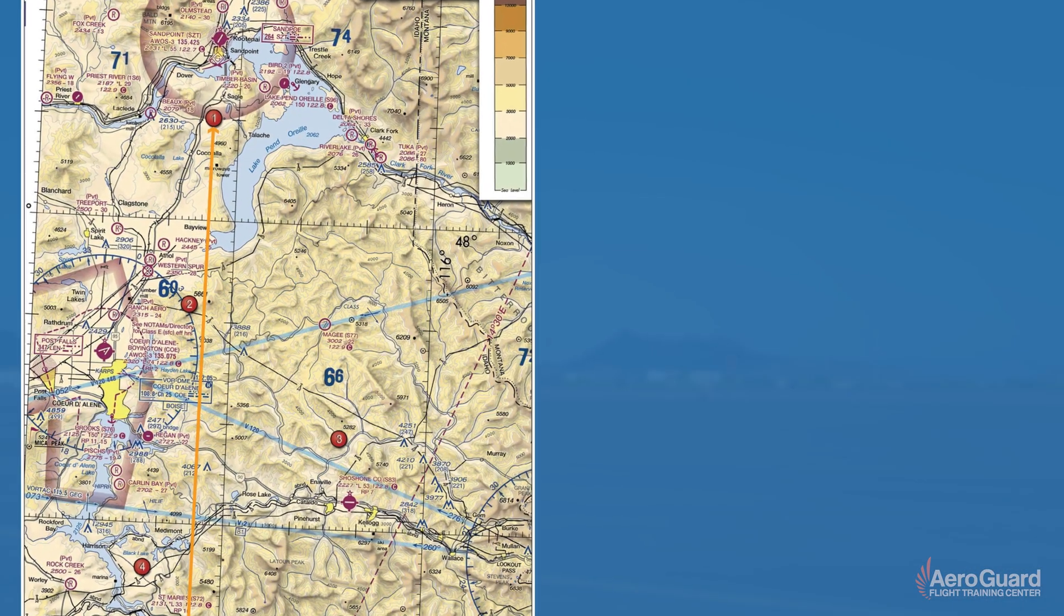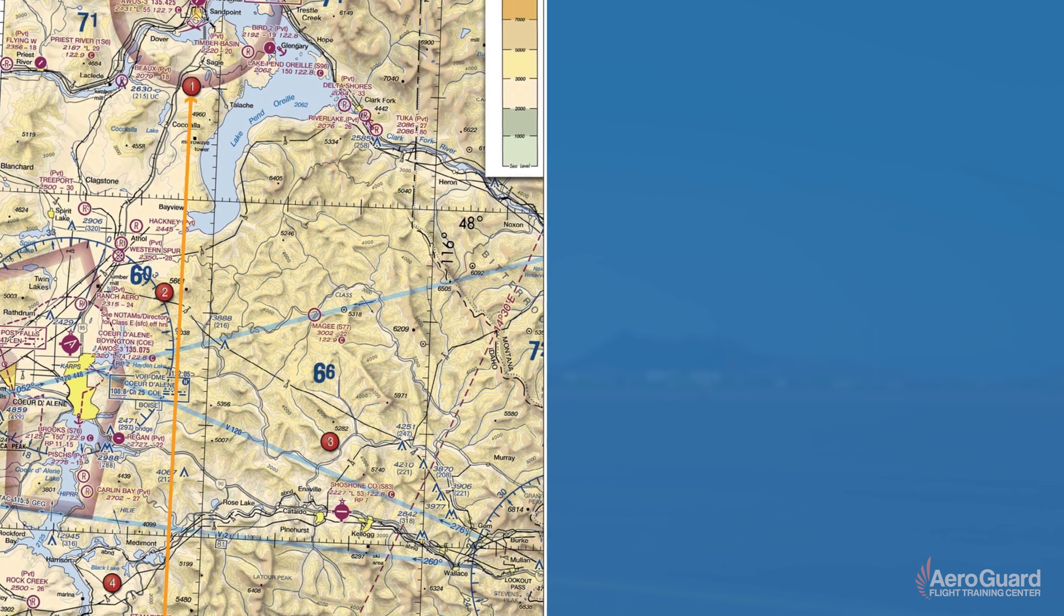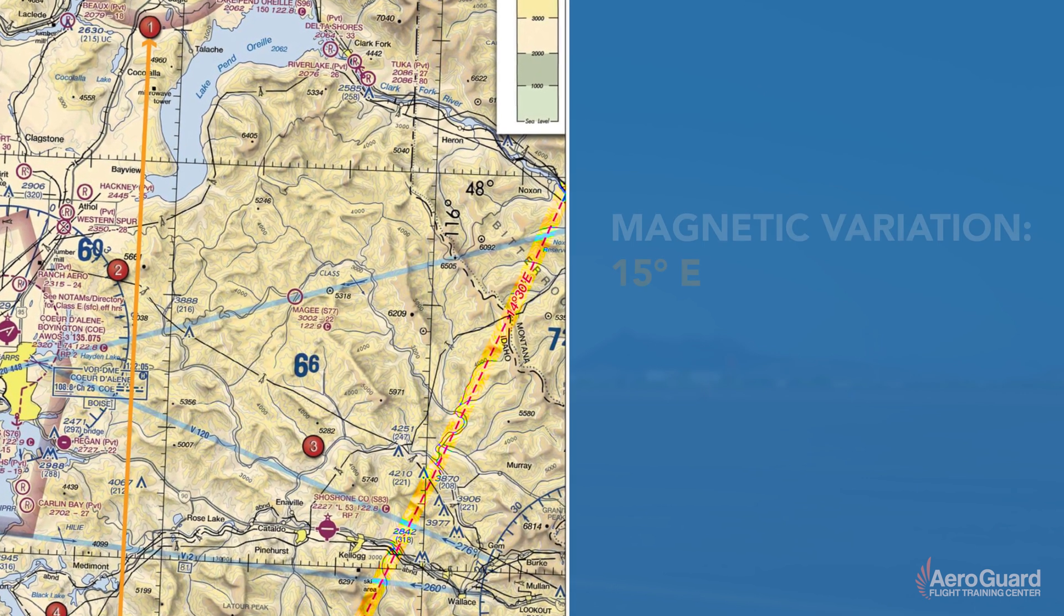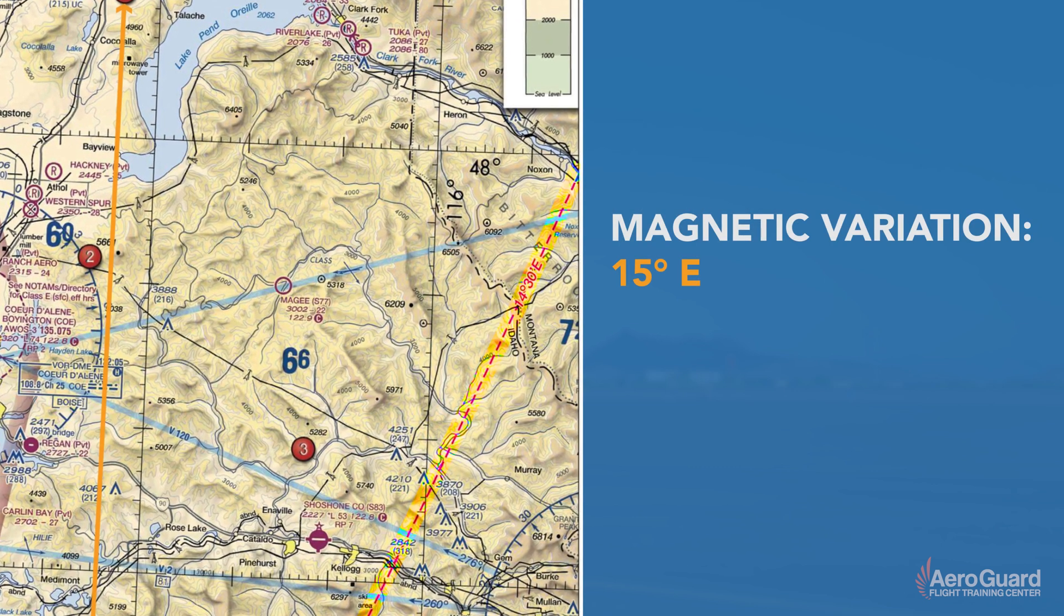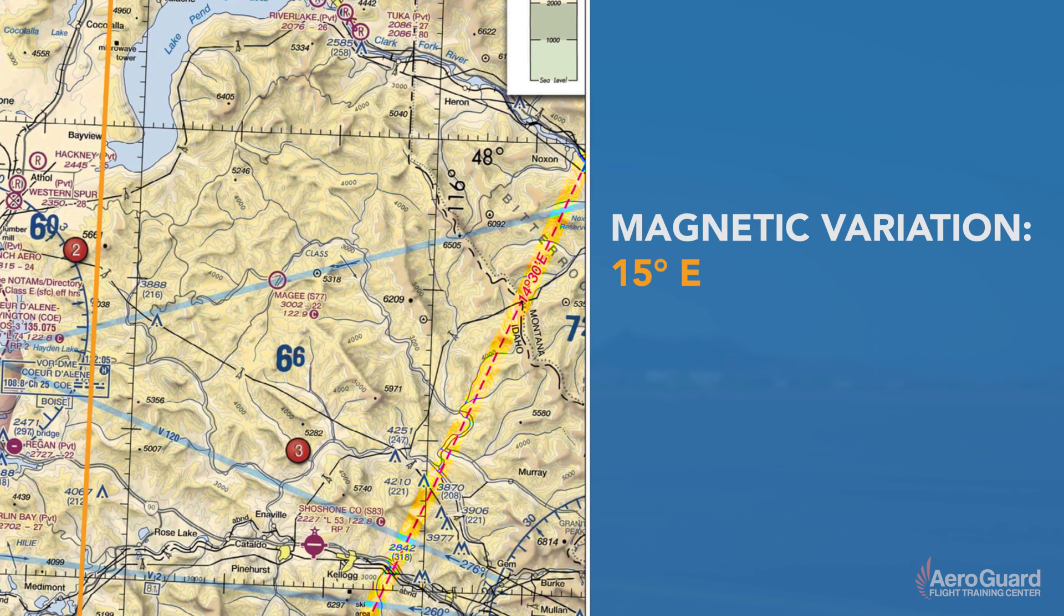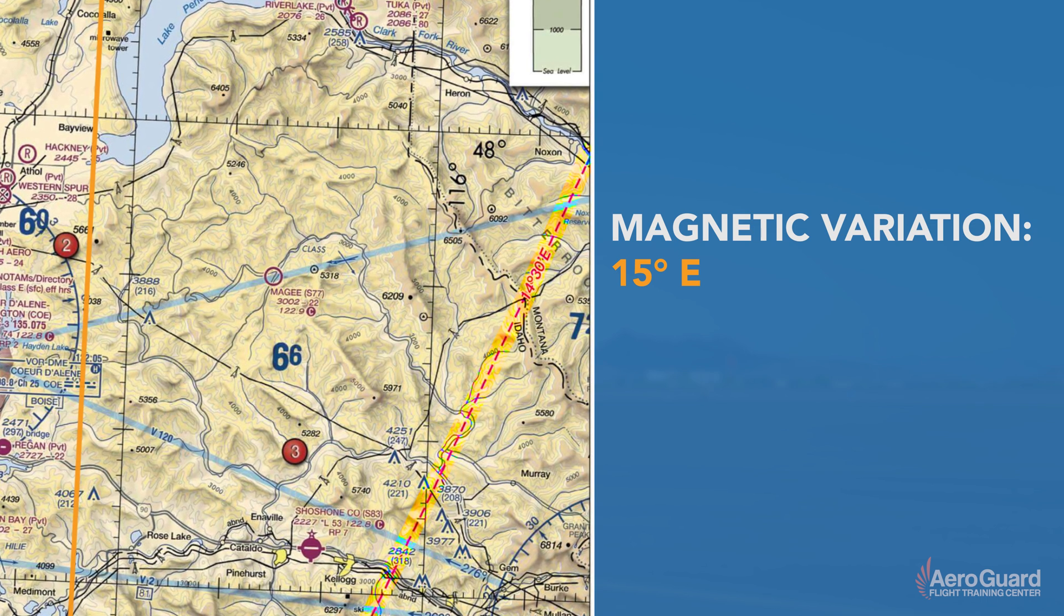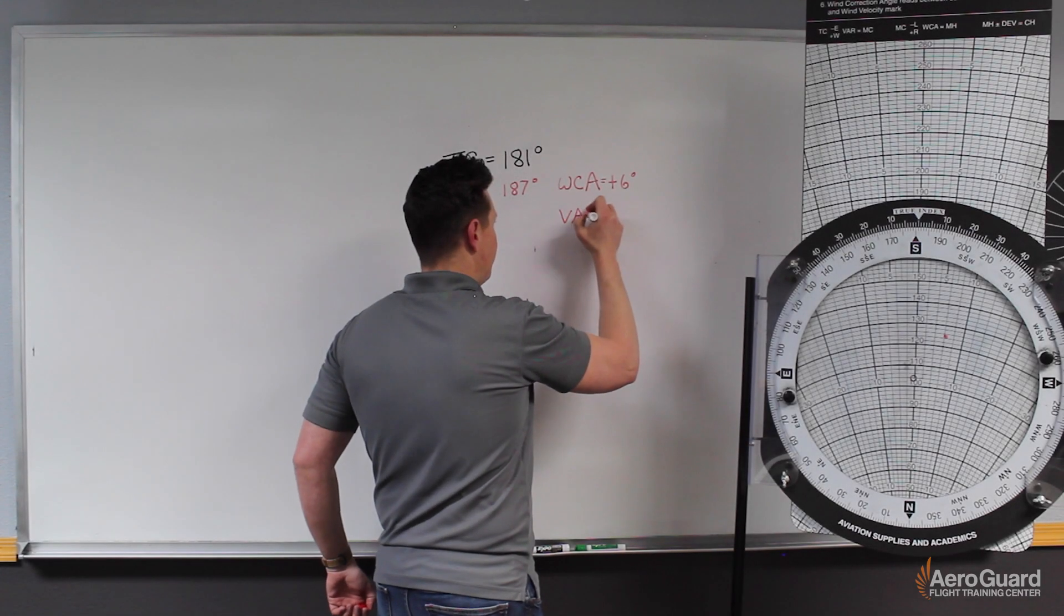We are looking for a dashed magenta line, and on that line it will indicate our variation. In this case, the closest line is a line of variation that says 15 degrees and then it has the letter E, which means east.